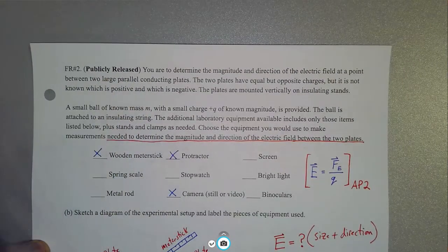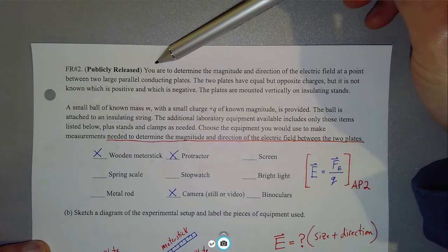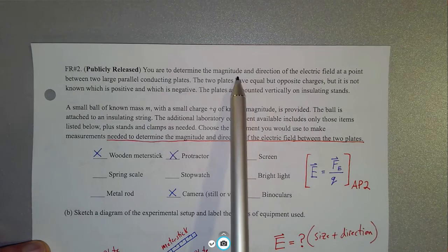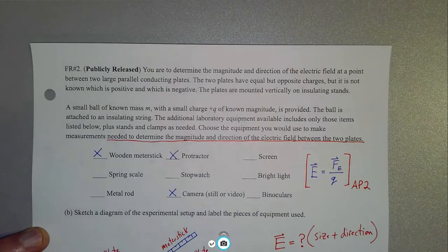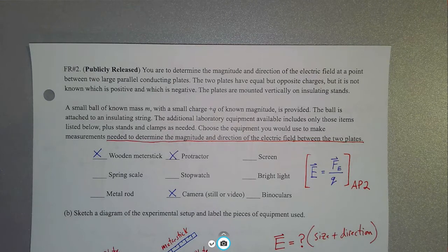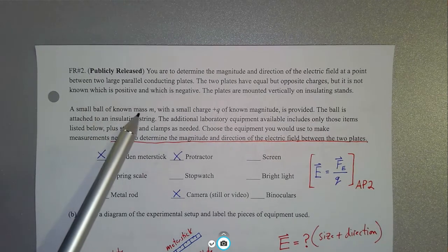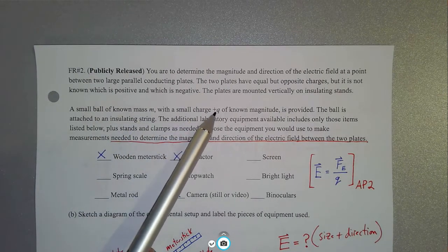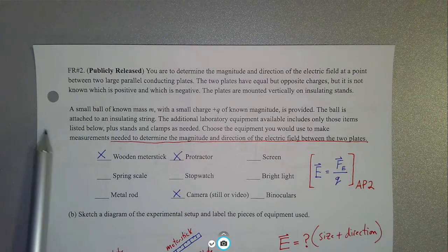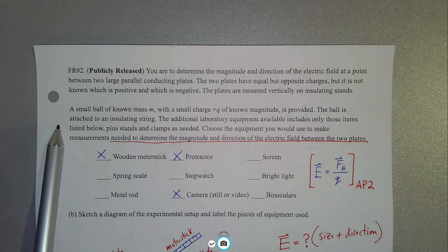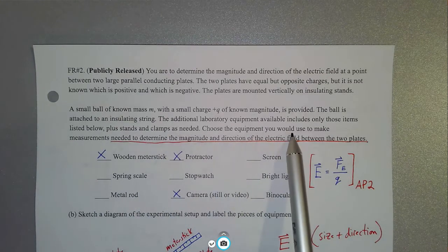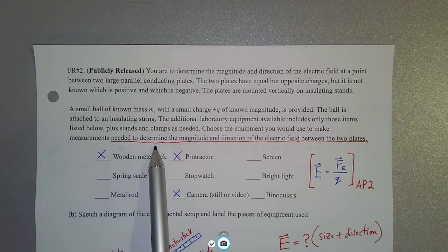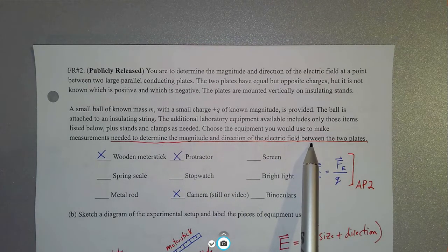This is a publicly released question. It says: you are to determine the magnitude and direction of the electric field at a point between two large parallel conducting plates. The two plates have equal but opposite charges, but it is not known which is positive and which is negative. The plates are mounted vertically on insulating stands. Choose the equipment you would use to make measurements needed to determine the magnitude and direction of the electric field between the two plates.